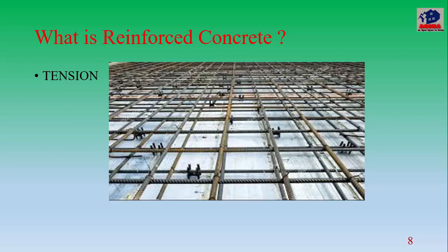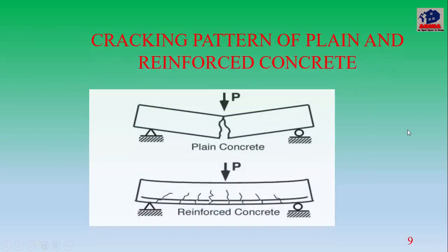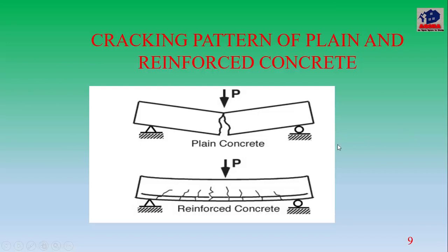Steel handles tension and concrete handles compression. The combination of concrete in compression and steel in tension — these two members act together as a structure. This is reinforced concrete and its cracking pattern — the first image shows the plain concrete structure with a sudden fracture under load.